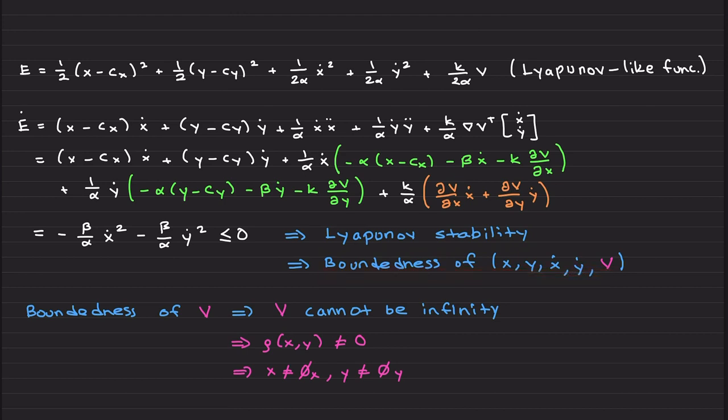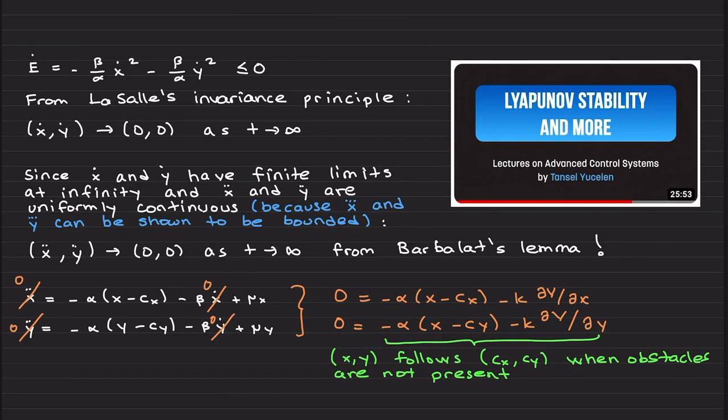As I tried to mention at the beginning of this analysis, boundedness of V implies that ρ cannot be infinity, so ρ of x and y cannot be zero. We cannot touch the obstacle, meaning obstacle avoidance is guaranteed mathematically.